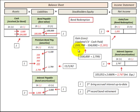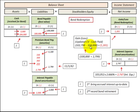Next, we calculate the gain or loss on the bond: updated carrying value minus cash paid. The updated carrying value is $100,000 in bonds payable plus $2,799 in premium to bonds payable, totaling $102,799. We paid cash of $104,000 to redeem the bond, so we credit cash for $104,000. The difference is $1,201.